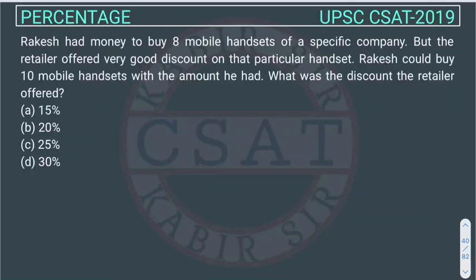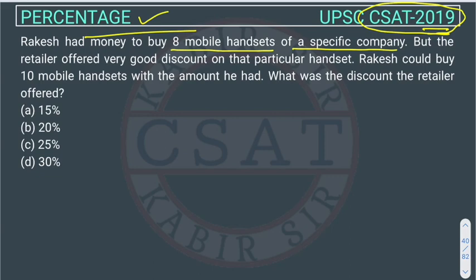This is a question about percentage from the UPSC CSAT 2019 exam. The question is: Rakesh had money to buy 8 mobile handsets of a specific company. But the retailer offered a very good discount on that particular handset, and so Rakesh could buy 10 mobile handsets.